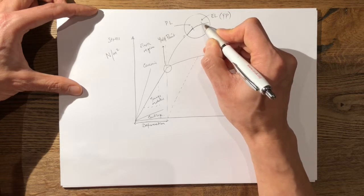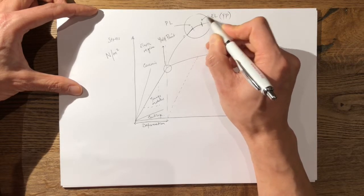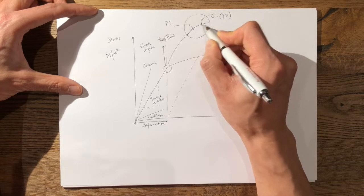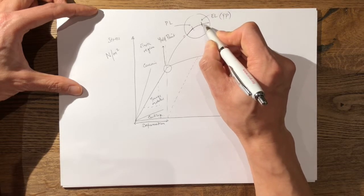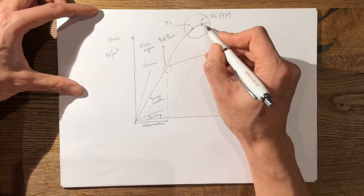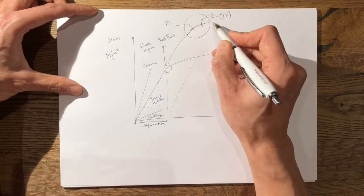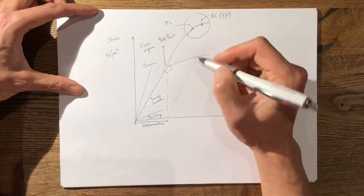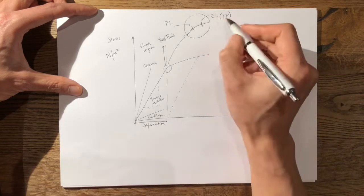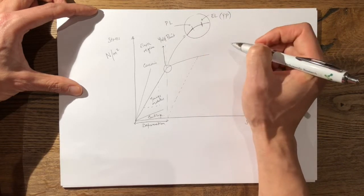Beyond this portion which is the elastic limit, it then enters the plastic region of the curve and therefore any point beyond this when the stress is removed you get permanent deformation and that's why we also know this as the yield point.